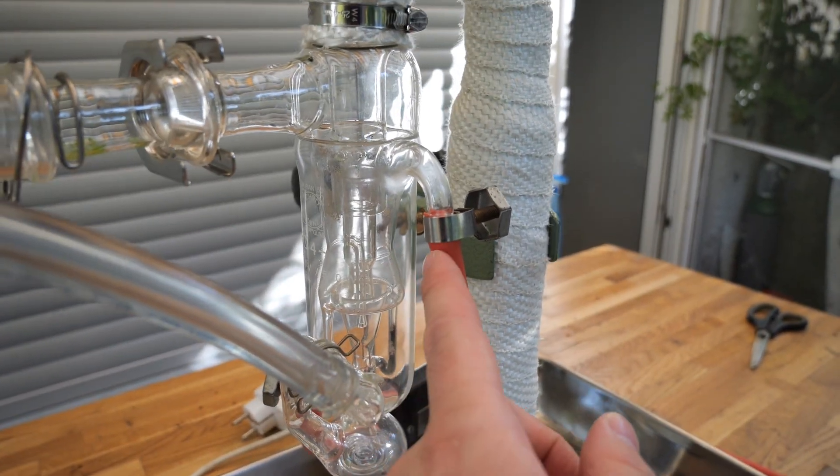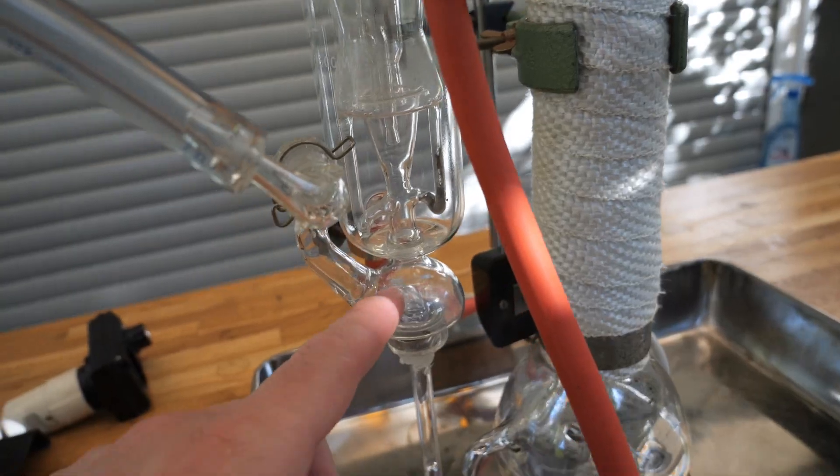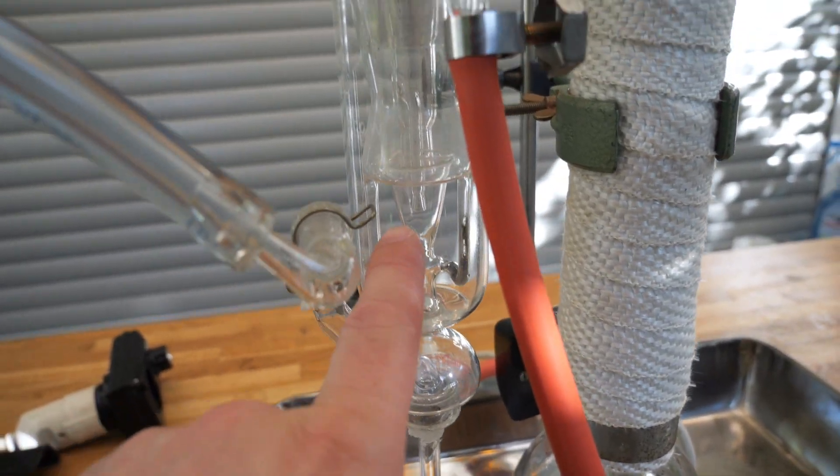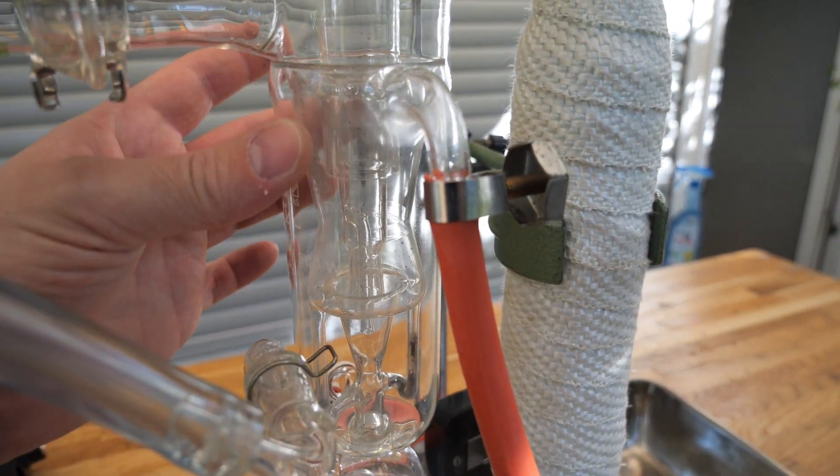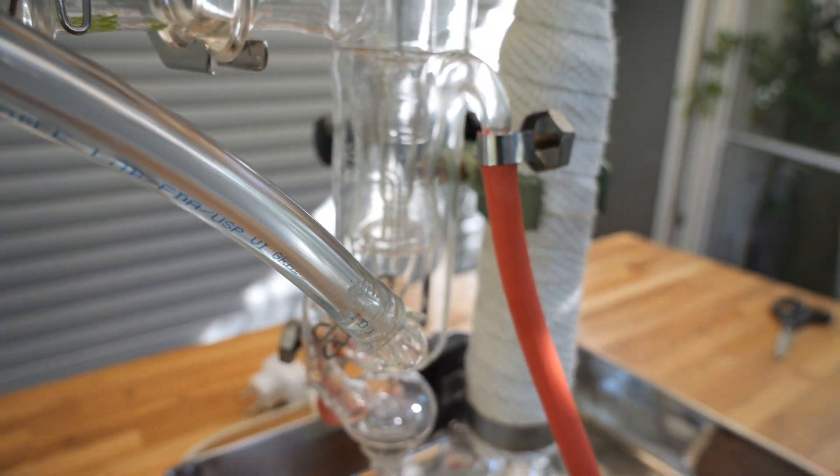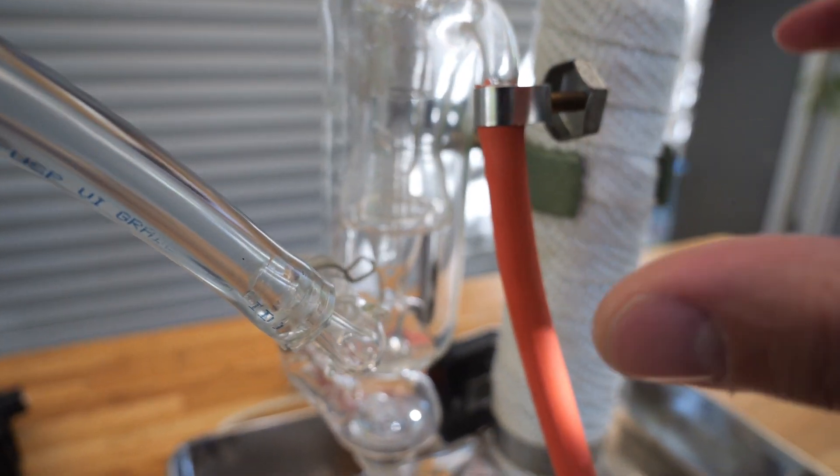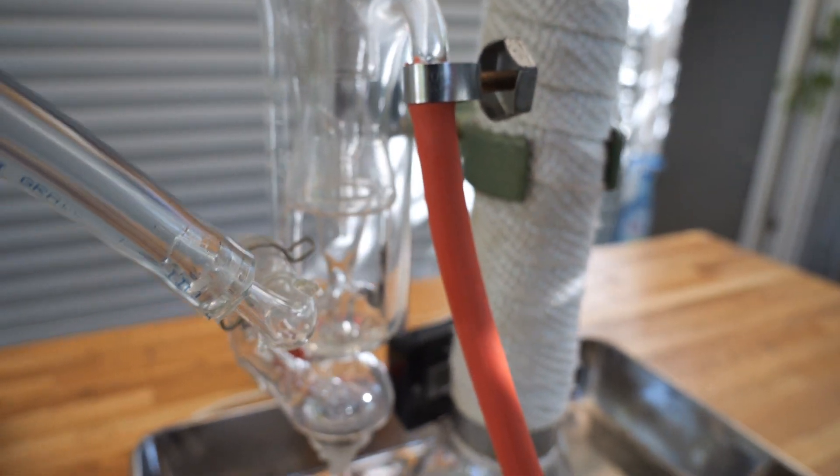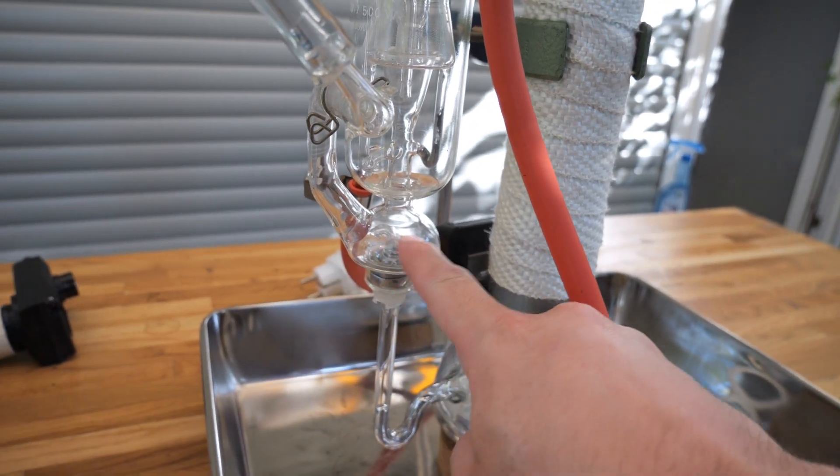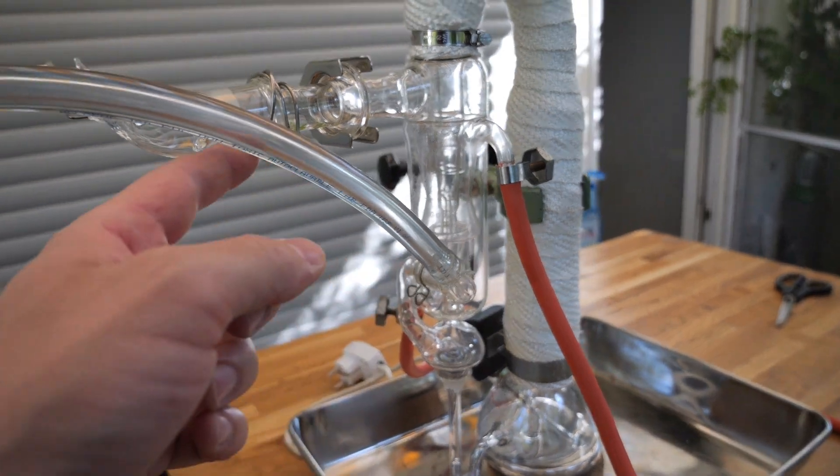There are basically four connections at this diffusion pump. Two of them are for the cooling water which is the one on top here and at the bottom here. The cooling water is flowing through this outer jacket here and cools the mercury vapor which is condensing. Just as a quick reminder the mercury vapor basically transfers its impulse to the gas particles in the vacuum.